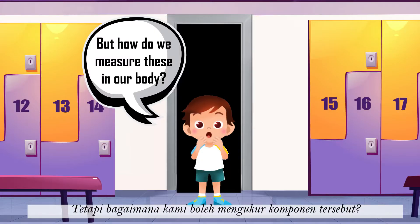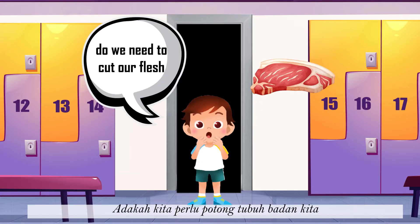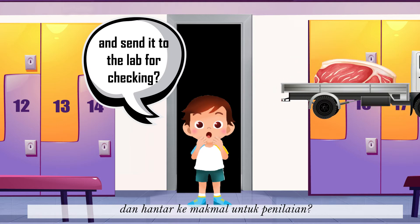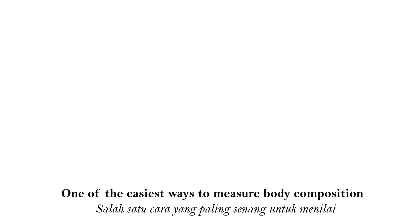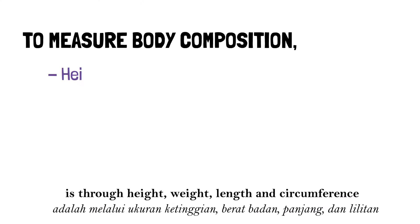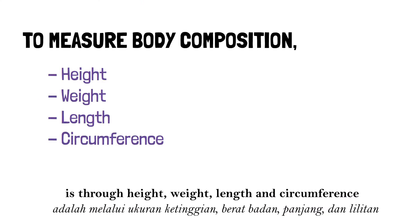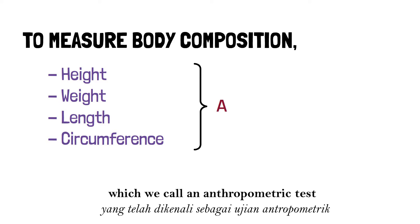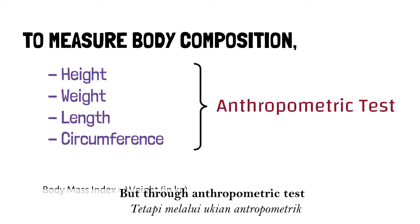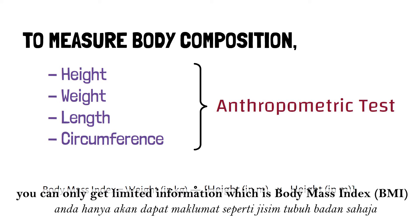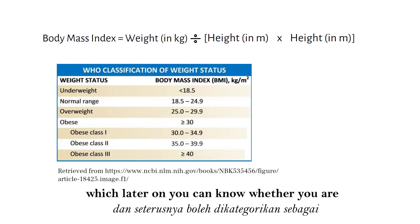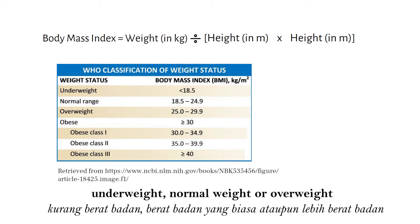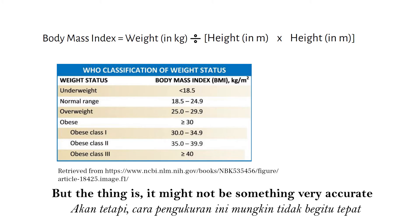But how do we measure this in our body? Do we need to cut our flesh and send it to the lab for checking? Of course not. One of the easiest ways to measure body composition is through height, weight, length and circumference, which we call an anthropometric test. Through an anthropometric test, you can only get limited information which is body mass index, BMI, which tells you whether you are underweight, normal weight, or overweight.